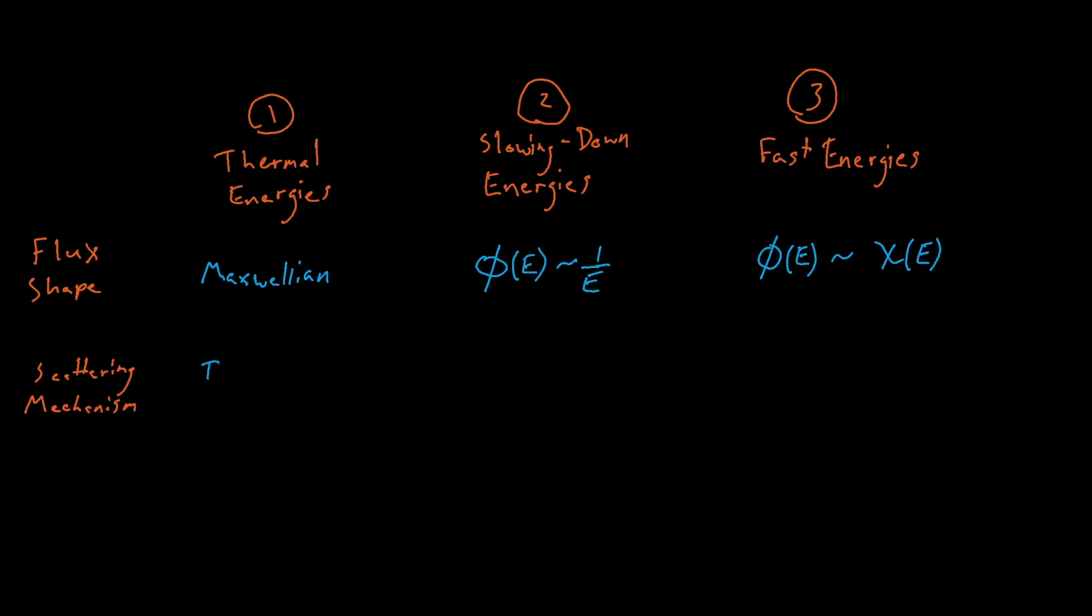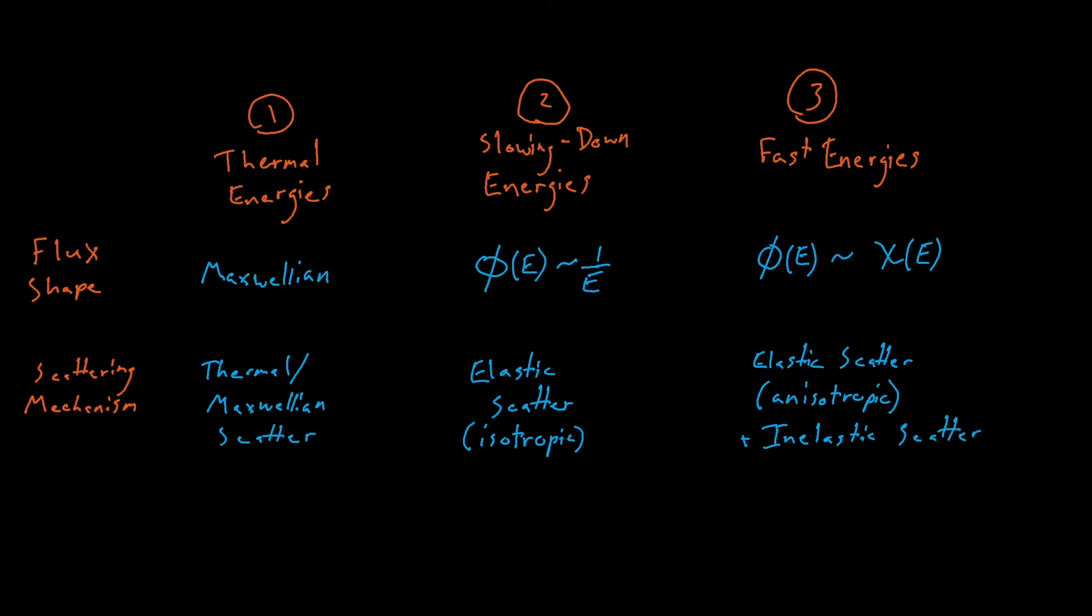For thermal energies, our scatter is dominated by scattering events between neutrons and actually atoms that are about the same in energy, which, again here, are at thermal energies. For slowing down energies, we predominantly see elastic scatter that is S-wave scatter, which means that it's isotropic in the center of mass frame. For fast energies, this changes, and we see either anisotropic or P-wave elastic scatters, or actually inelastic scattering reactions.